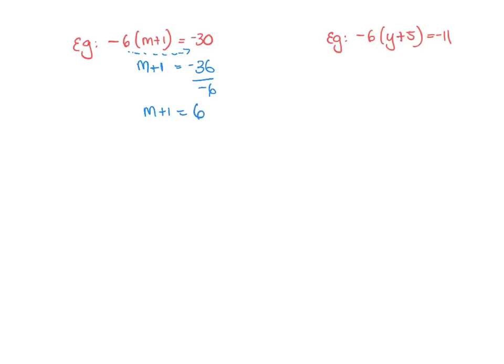Okay, and now I'll move the 1 over because I'm trying to get m by itself. It'll be 6 minus 1. m equals 5. So that was easier than expanding.